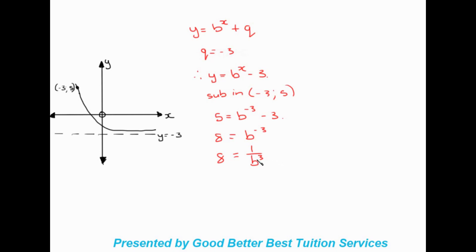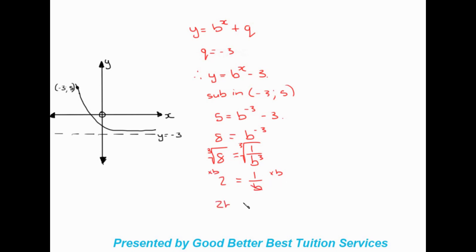We cube root both sides. On the left we get 2, since that is the cube root of 8. On the right we get 1 over b. To solve for b, we multiply both sides by b, giving 2b equals 1. Dividing by 2, we get b equals one half.